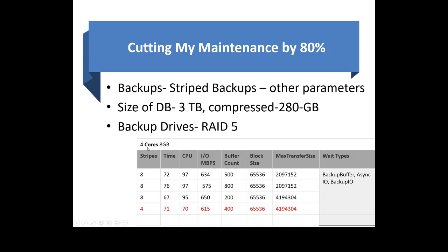The dev server was four cores and 8 GB RAM. When we did an eight-file backup — and yes, when talking about striped backups, we're talking about backing up to multiple backup files. Eight files, four files, and so on. When you do this experiment, remember the options available to you: max transfer size, block size, buffer count — these are all great parameters.